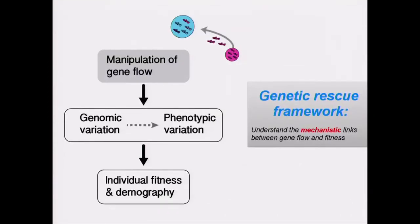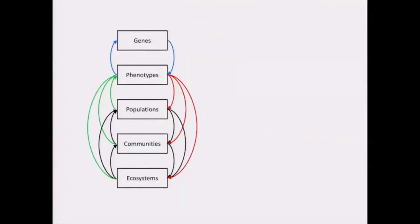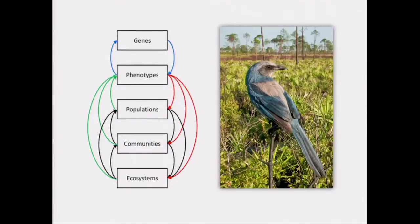Studying genetic rescue in an experimental context can provide a powerful framework for understanding positive and negative effects of gene flow on fitness. This framework requires a manipulation of gene flow and tests effects on genomic and phenotypic variation, and ultimately on individual and population fitness. More broadly, it contributes to the rapidly developing field of eco-evolutionary dynamics and can help us design and implement assisted migration strategies for reversing declines of small and threatened populations.